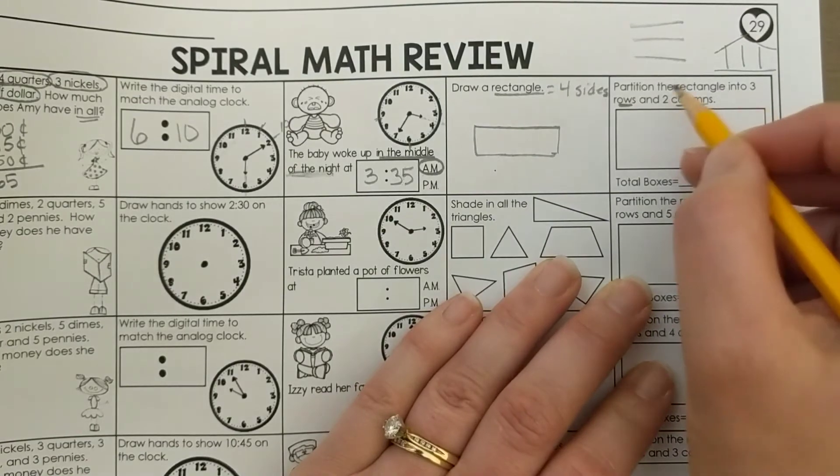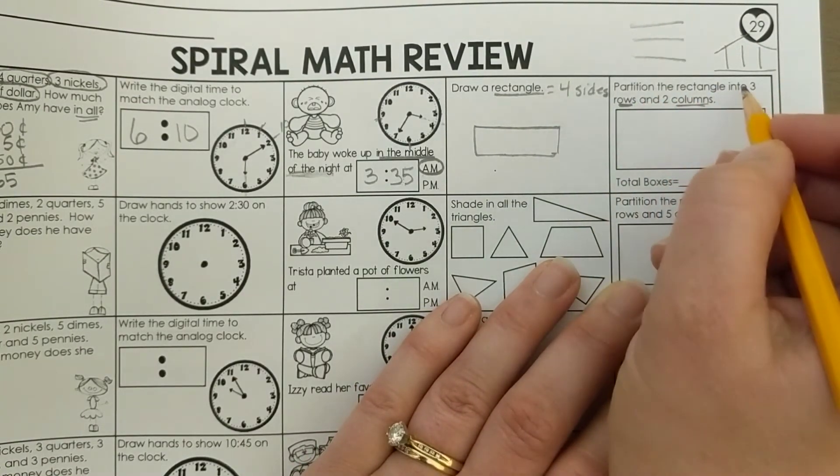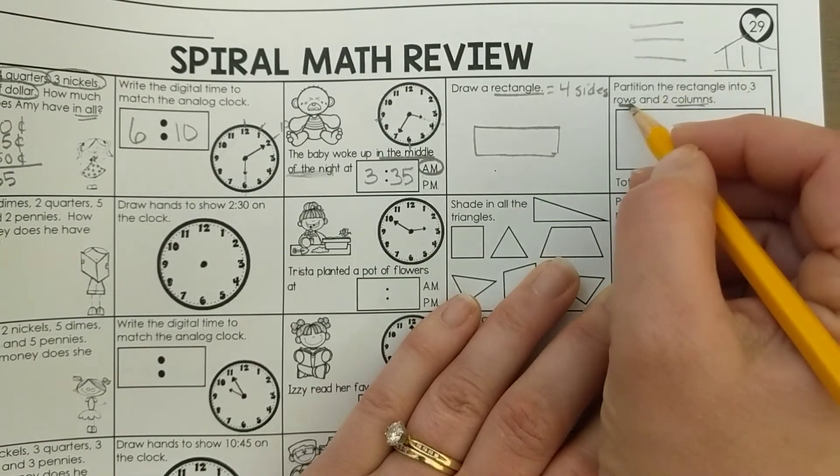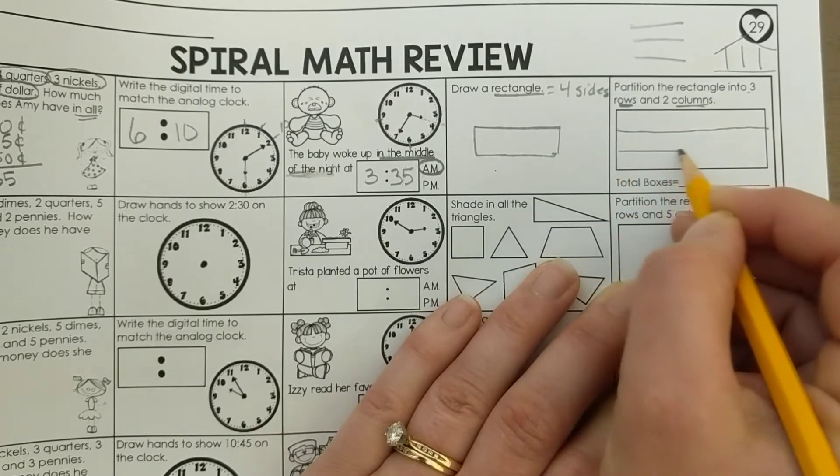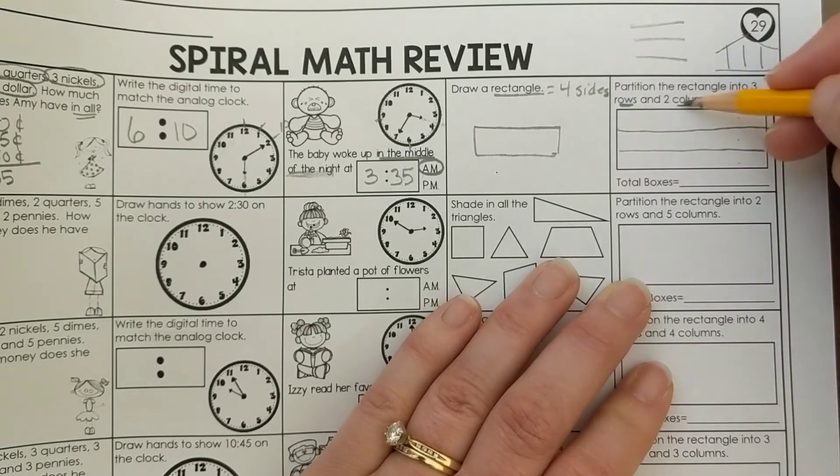If we have to make three rows, that means we're talking about side to side. You draw one less line than there are rows, so I only need to draw two lines to make three rows. Now columns are up and down.